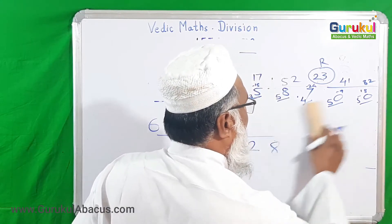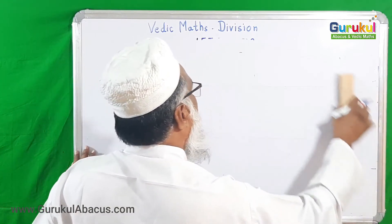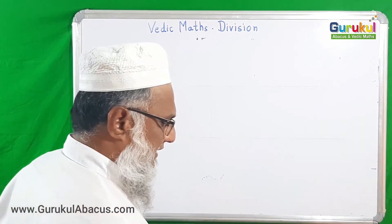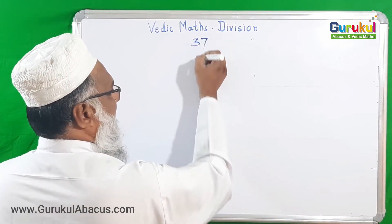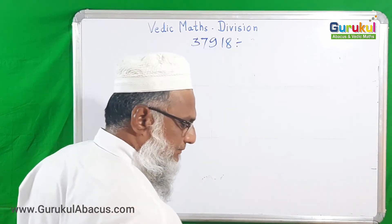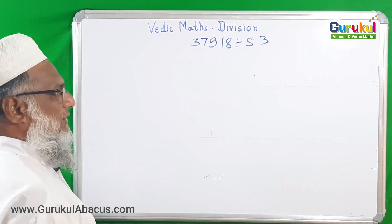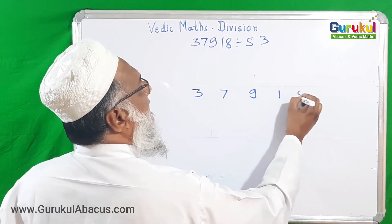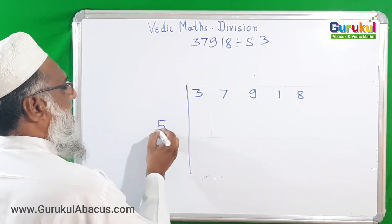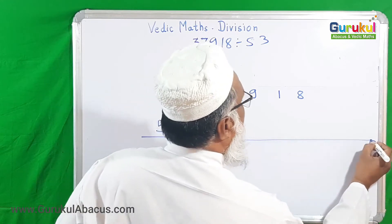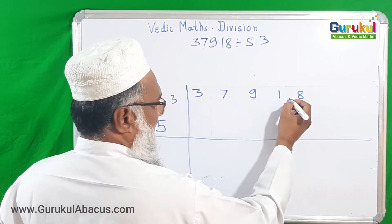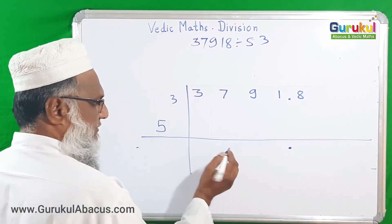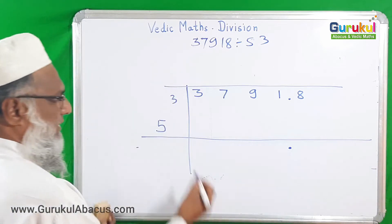By this method we can solve division of any bigger number — 5-digit, 7-digit, 8-digit. Our next example is 37,918 divided by 53. I write 5 here and 3 as the flag digit. One digit from the number goes after the decimal point, and I place the decimal point both in the problem and in the answer section.